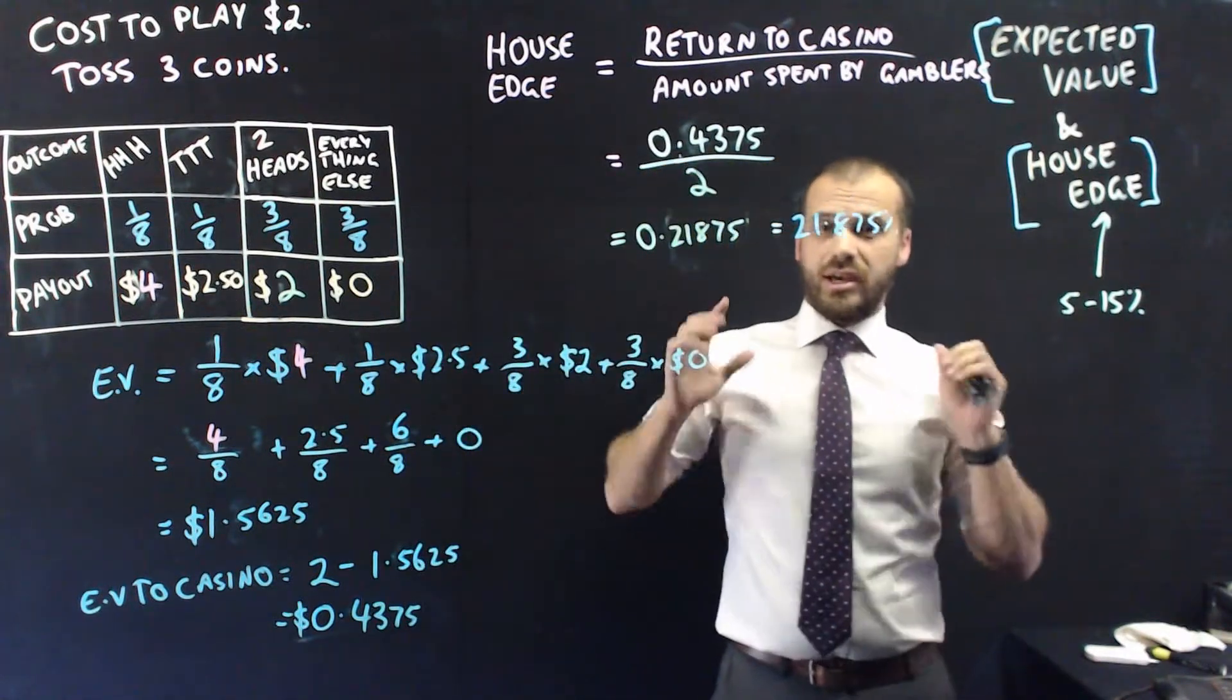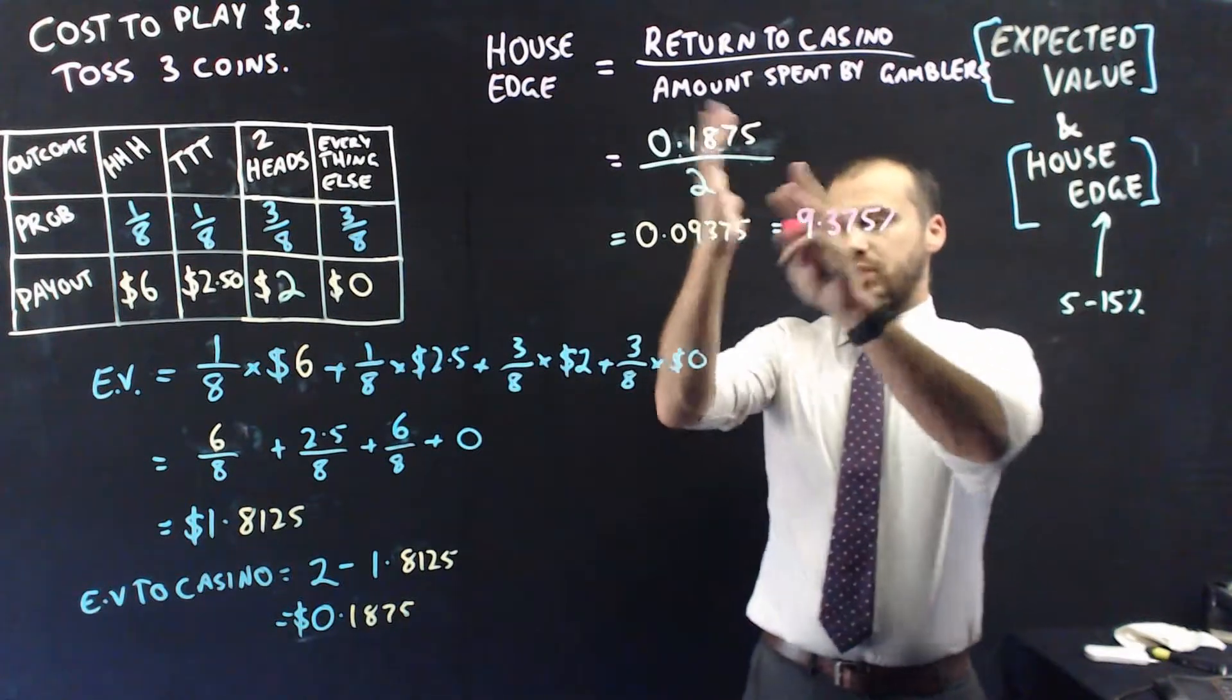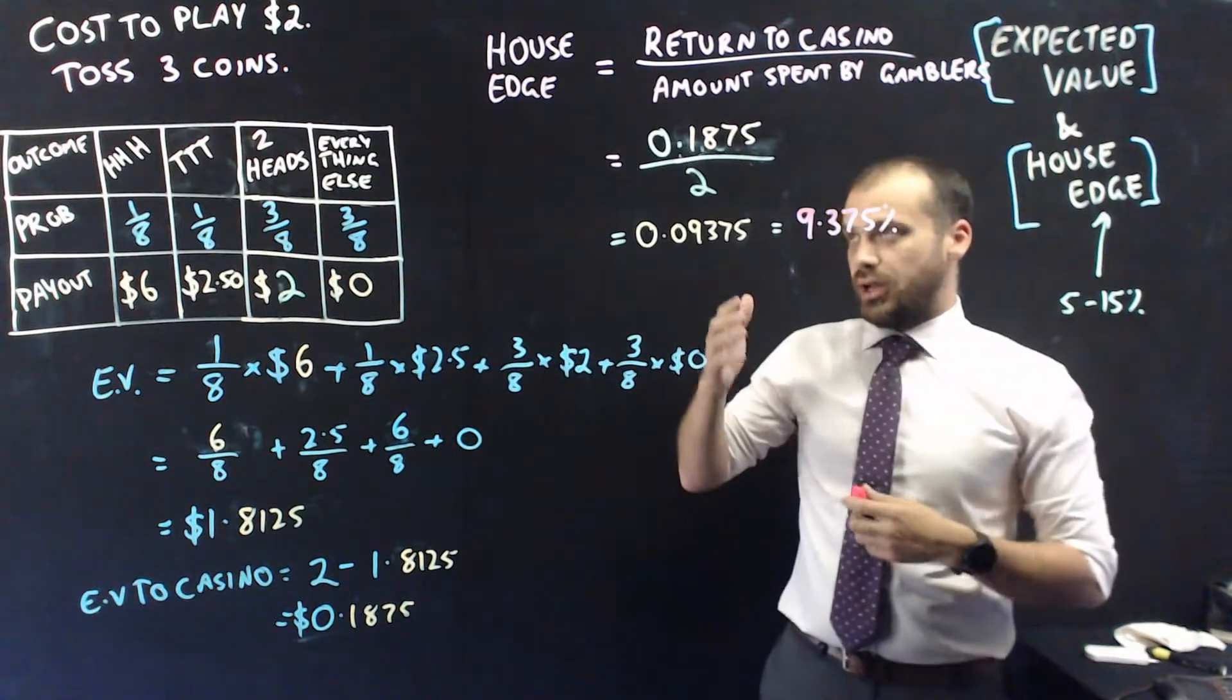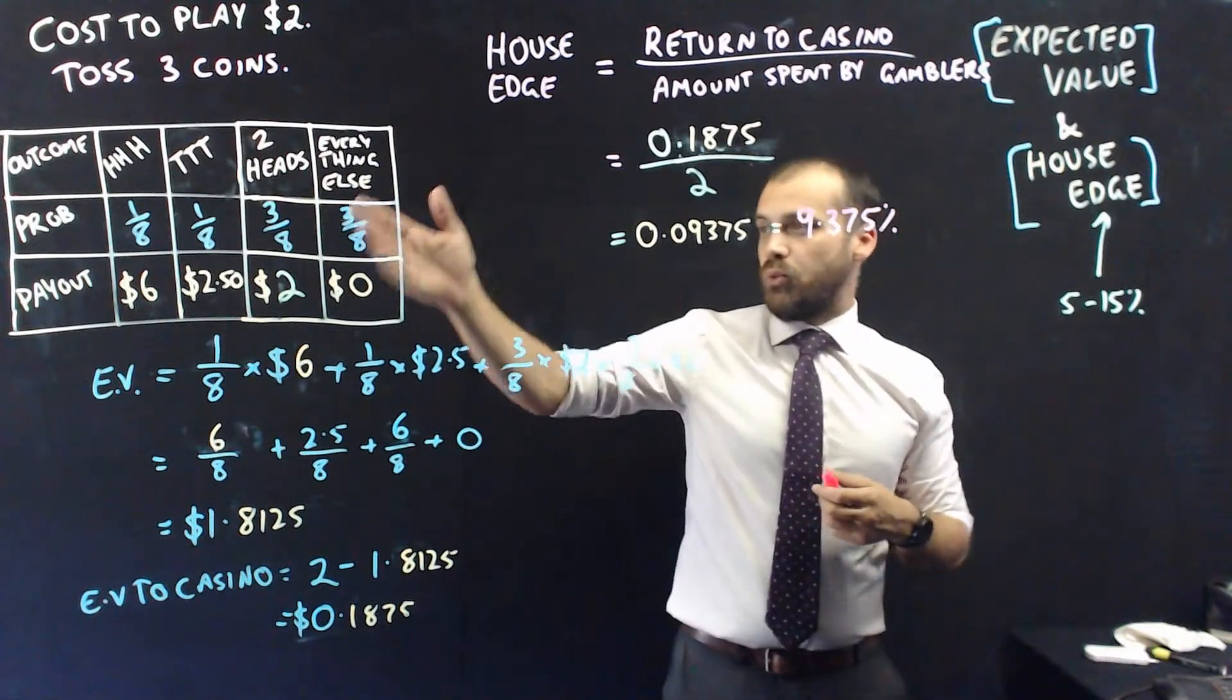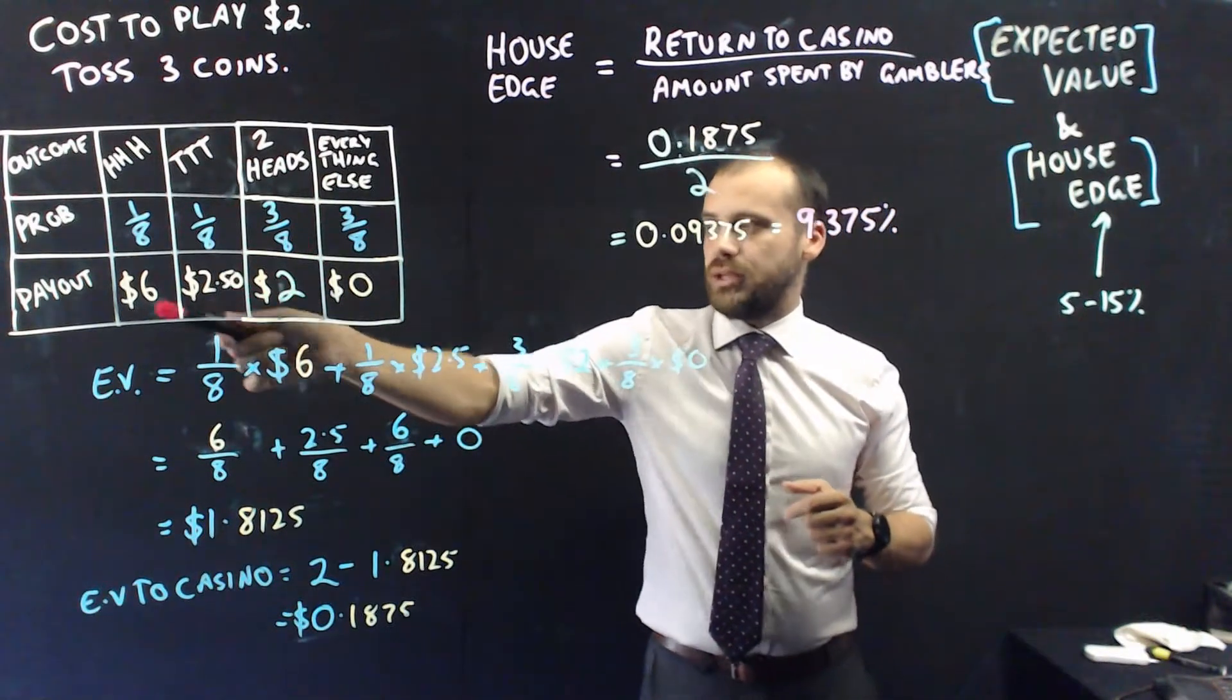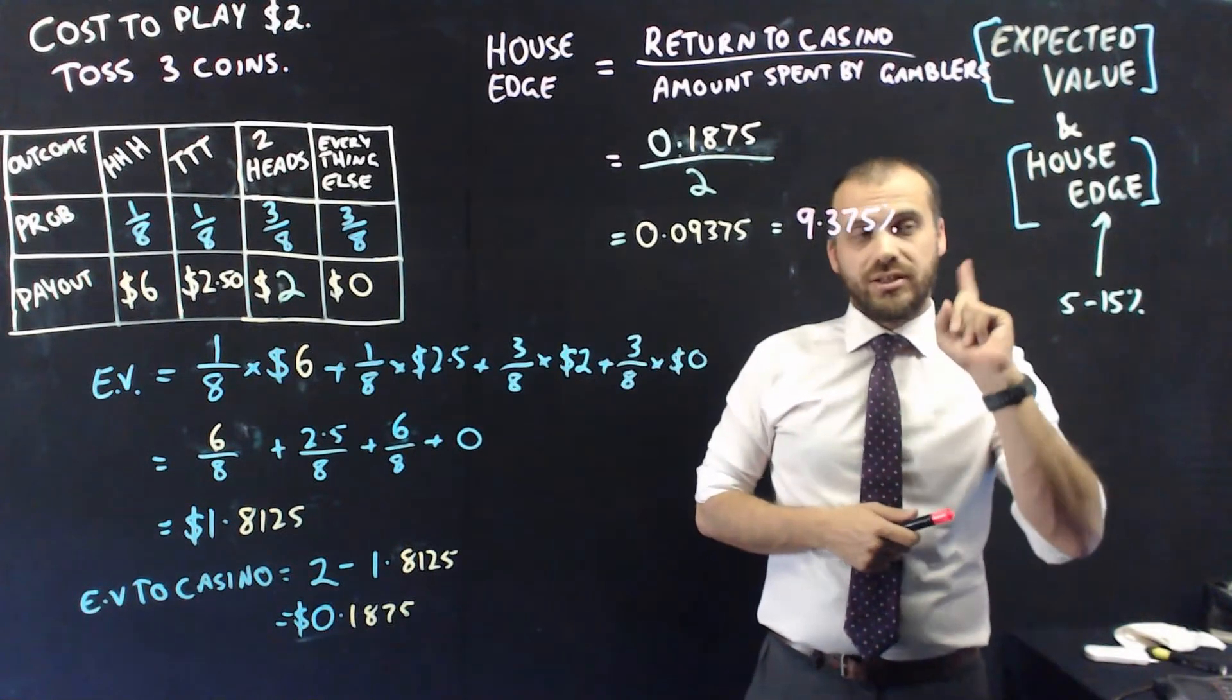I'm going to change $4 to $6, and hopefully we're in a game that's fun. Nailed it. Changing that top payout to $6 changed the expected value to the casino to 0.1875, which changed our house edge to 9.375%, smack bang in the middle of the fun zone, 5 to 15%. The casino's happy because every time you put down any money, it makes almost 10% of that money from you. The player's happy because 1 eighth of the time, they pay $2 and they win $6. That's fun. They're actually winning more often than they're losing. I think this would be a fun game to play, and it's all thanks to being able to figure out that house edge and get it into that nice little sweet zone. That's the expected value and house edge.